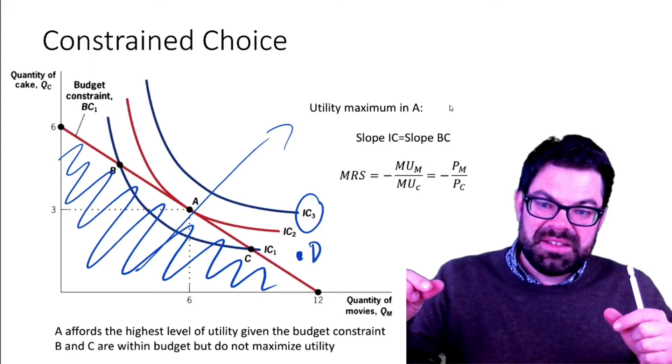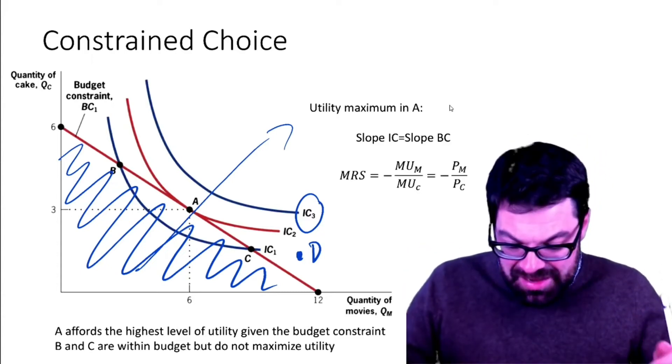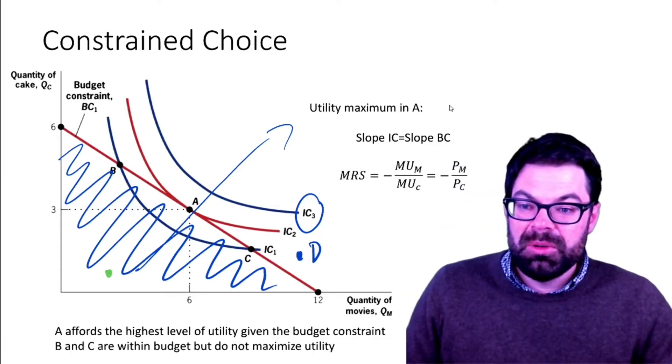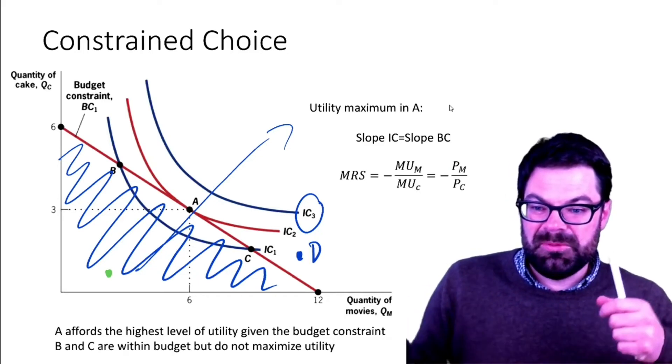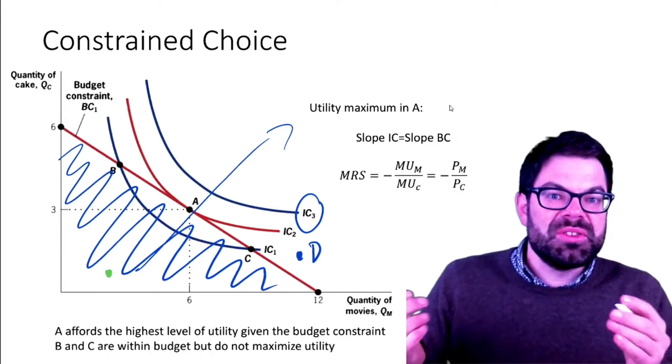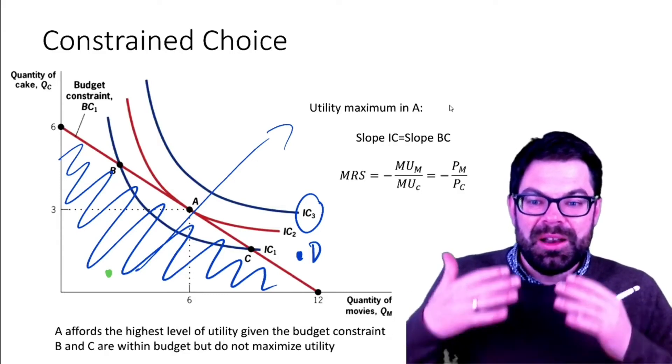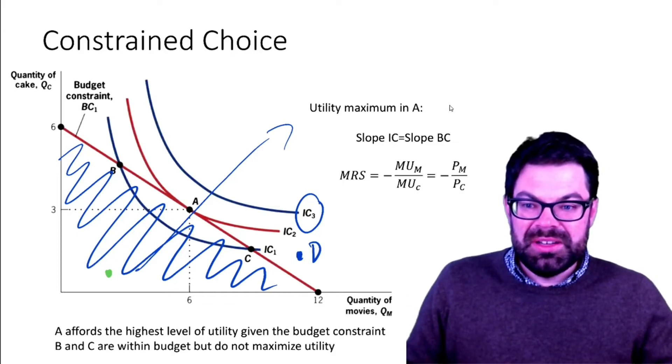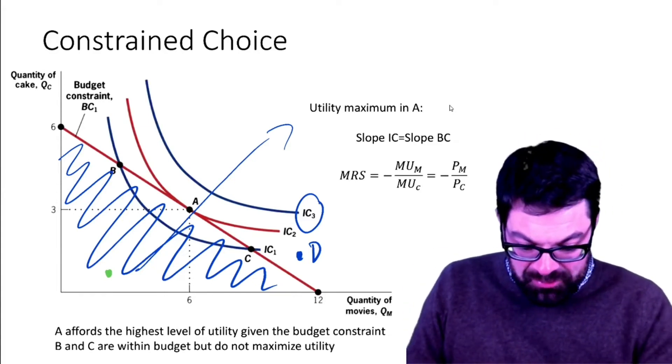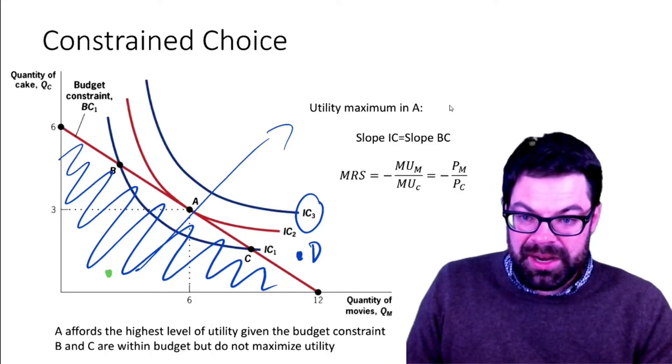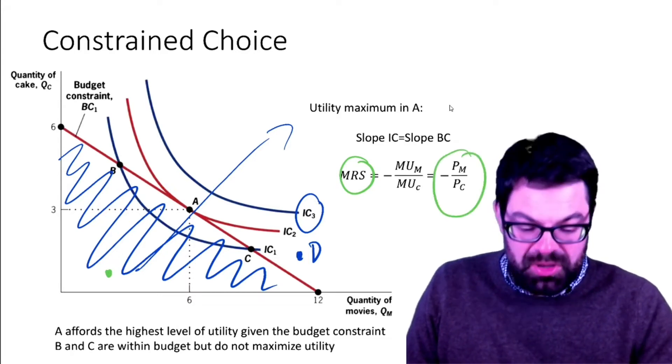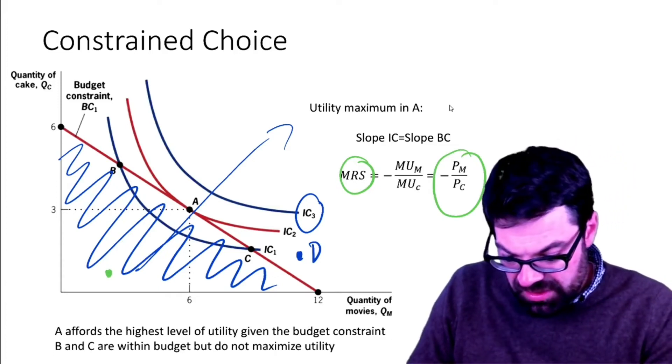At what set or subset of that budget set would the person actually exhaust their budget? That has to be on that red line. If the person only consumed very few movies and very few cakes, clearly they don't exhaust their budget, so that cannot be an optimal choice because they could have a higher utility level by simply using their budget. The optimal consumption point is one where the slope of the indifference curve, which is the marginal rate of substitution, equals the slope of the budget constraint. That is given here in point A.